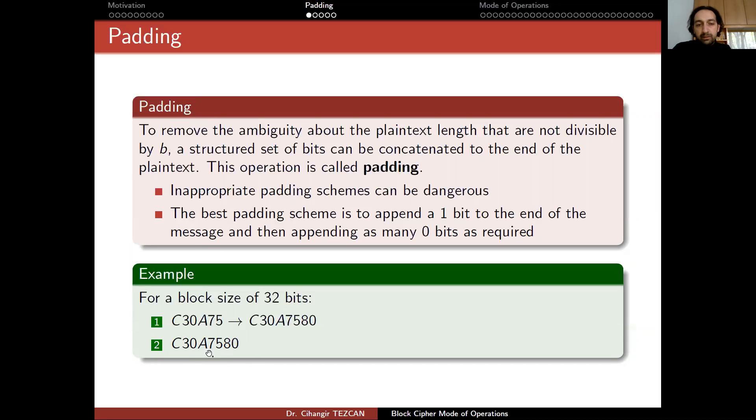But since the block size is 32 bits and this is already 32 bits, you have to create another block and apply the padding there. So you start with a single one and 31 zeros. So if you use padding, when you want to encrypt a message that is a multiple of the block size, then you have to create another block. So this causes a message expansion.